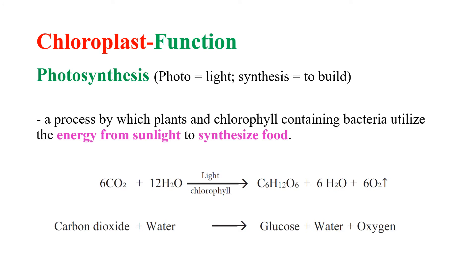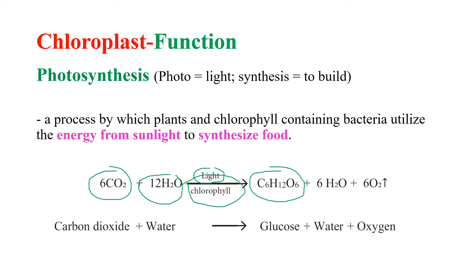Photosynthesis is the most important function of chloroplasts. It is a process by which plants utilize the energy from sunlight to synthesize their own food. During photosynthesis, carbon dioxide combines with water in the presence of sunlight and chlorophyll to form carbohydrates, and oxygen is released as a byproduct.